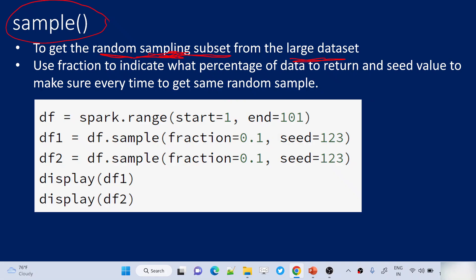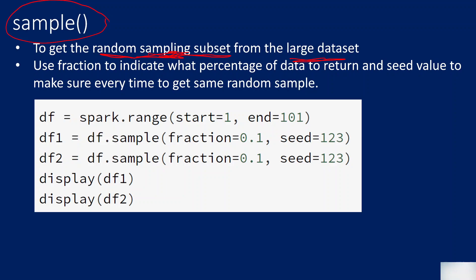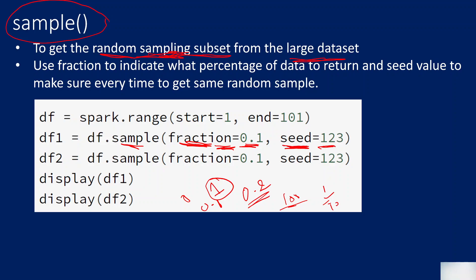The sample function will return a random sample subset from your entire dataset. Let's create a DataFrame with 100 rows, numbers from 1 to 200, and then take maybe 10 or 20 percent of those rows randomly using the sample function. The sample function has a parameter called `fraction`, where you pass values between 0 and 1 — for example, 0.1 means 10%, 0.2 means 20%.